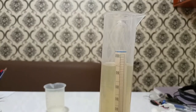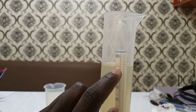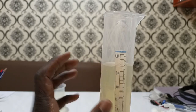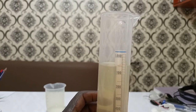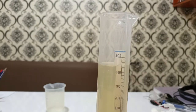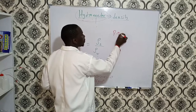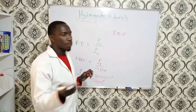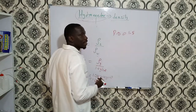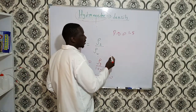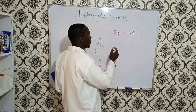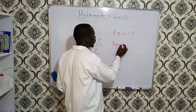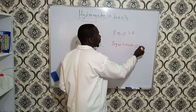Looking at the reading, the water level is slightly below 1.5. Reading at the meniscus, the relative density of the sugar-water solution is 1.5. This shows that a solution of sugar and water is denser than water alone.